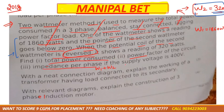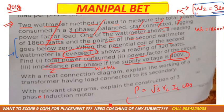Next, they ask for impedance per phase, given supply voltage is 400V. The power formula is: P = √3 × VL × IL × cos φ. Total power is known, √3 is known, VL = 400V, cos φ was found in the previous part — so IL can be calculated.